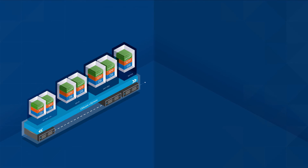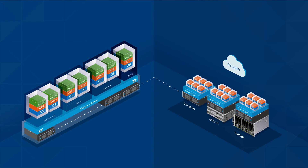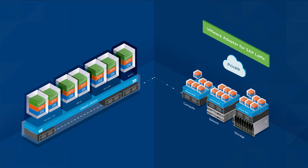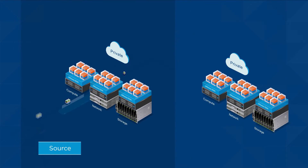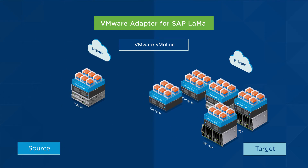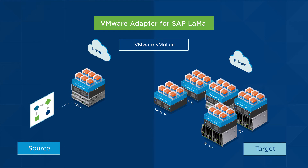Providing a single console to centrally manage your whole SAP landscape, it enables peak operational output through greater visibility and control. Here's how the VMware Adapter for SAP LAMA helps you get the most out of it. First, it enables the mass start and stop of your SAP systems on VMware virtual infrastructure. Second, it allows you to migrate a whole SAP system from a source host or data store to a target host or data store, leveraging VMware vMotion technology.